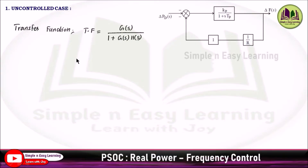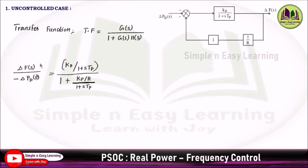The transfer function is defined as the Laplace transform of output divided by Laplace transform of input. For this block diagram, the Laplace transform of output is del F(s) and input is minus del PD(s). So del F(s) divided by minus del PD(s) equals G(s) divided by 1 plus G(s) times H(s), since here it is a negative feedback loop.